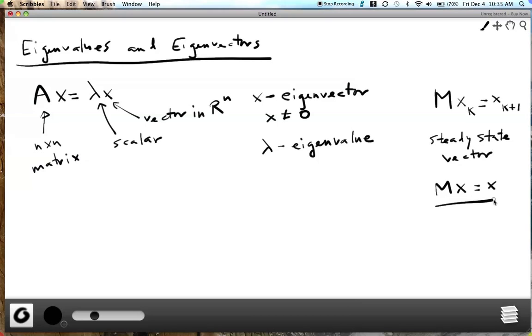If you compare this system with our eigenvalue system here, then you can see that they look similar. In fact, if we write this one as MX equals 1 times X, then they look very similar. What we have here is that M has a steady state vector if 1 is an eigenvalue of M. So when we're looking for steady state vectors, we already are saying we've got a potential eigenvalue 1. Does it have a corresponding eigenvector? If it does, then there's a steady state vector. If not, then there is none.